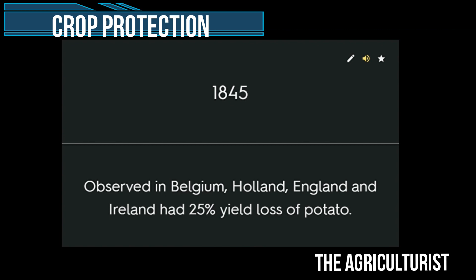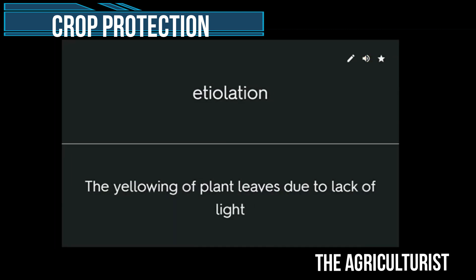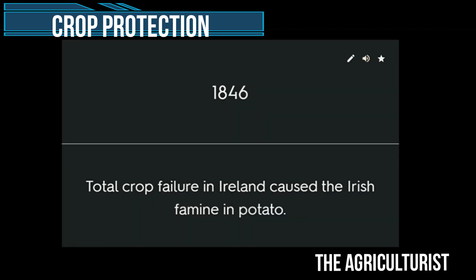1845: observed in Belgium, Holland, England and Ireland — 25% yield loss of potato. Etiolation: the yellowing of plant leaves due to lack of light. 1846: total crop failure in Ireland caused the Irish famine in potato.